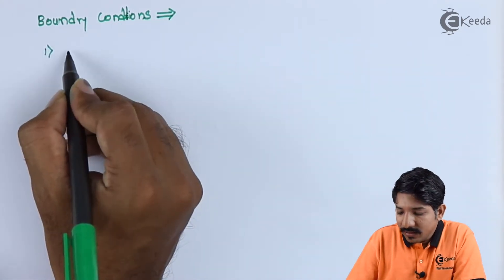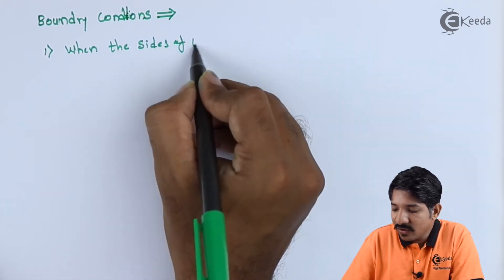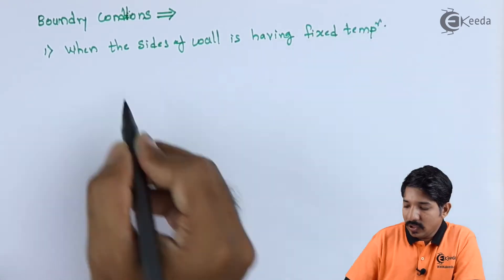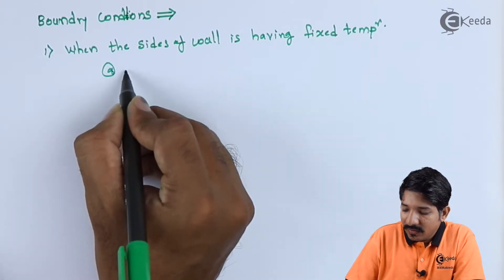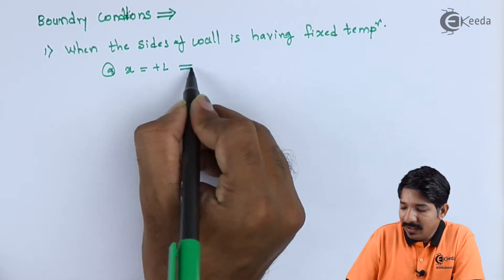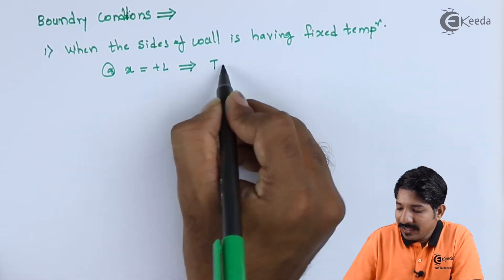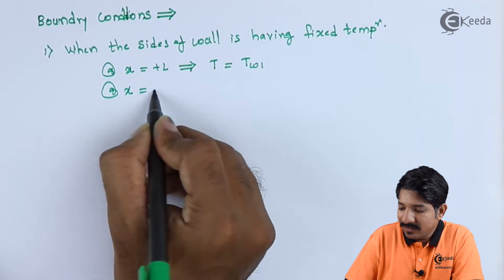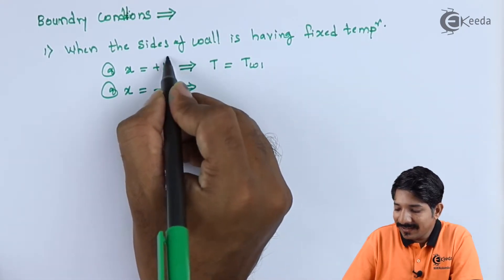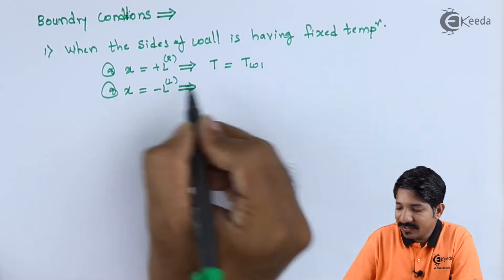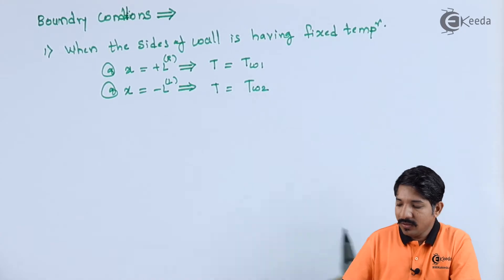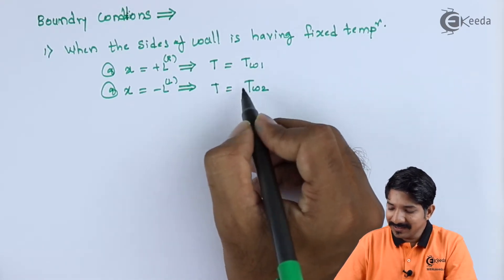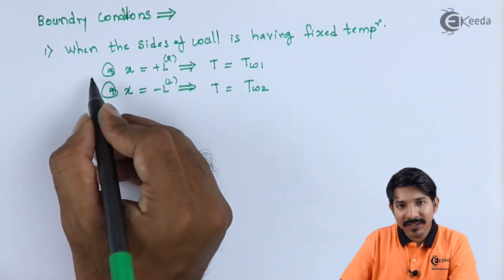The first boundary condition is when the sides of the wall have a fixed temperature. Mathematically, at x equals positive l, T equals T_w1, and at x equals negative l, T equals T_w2. Here T_w1 and T_w2 are constants. If this is the case then we can solve our equation using these two boundary conditions.